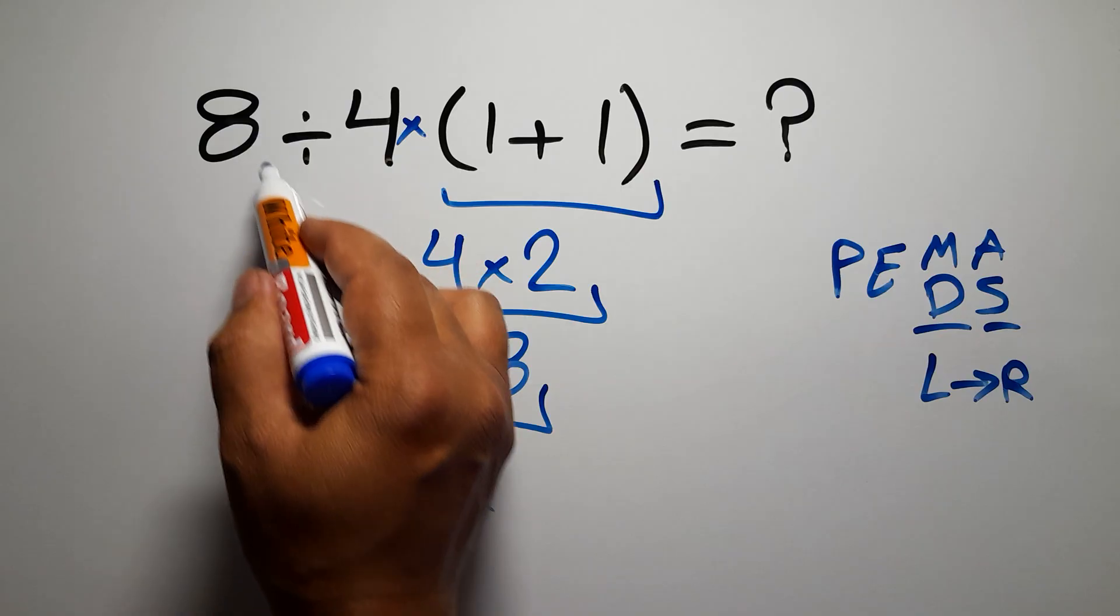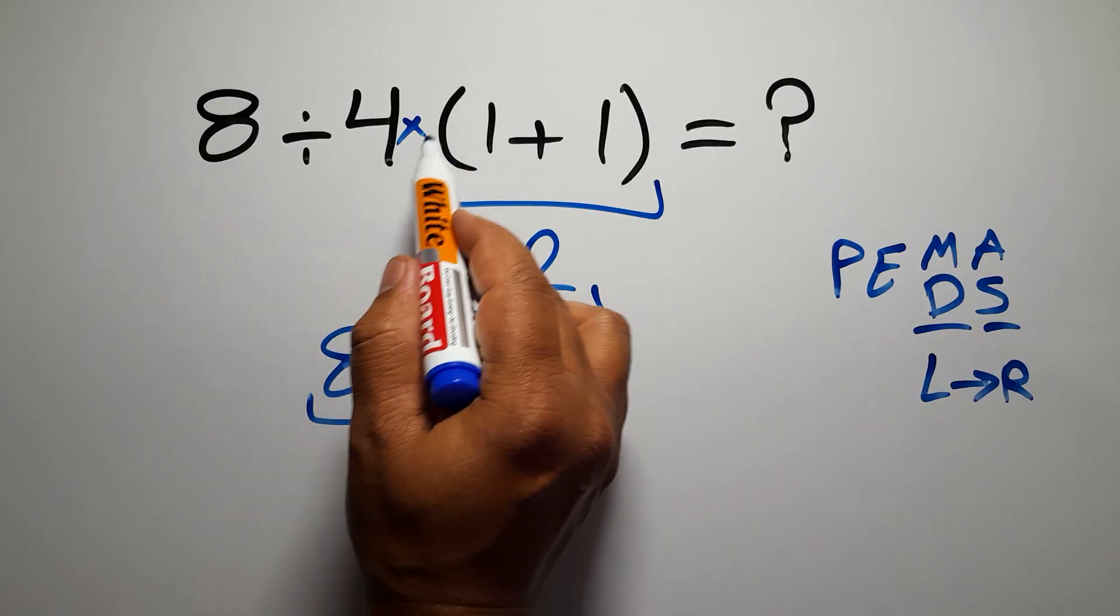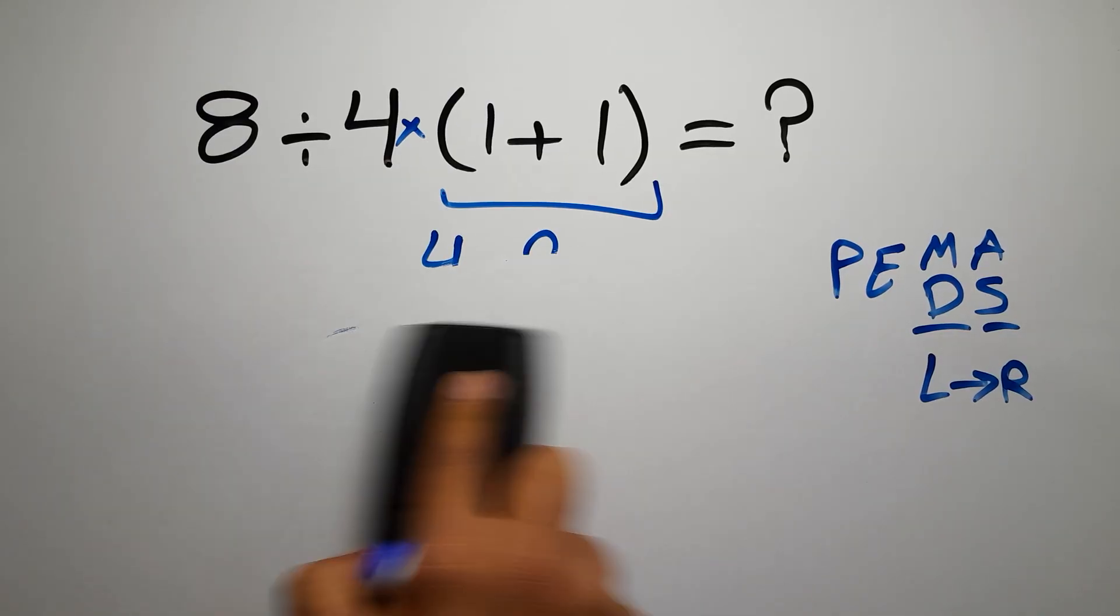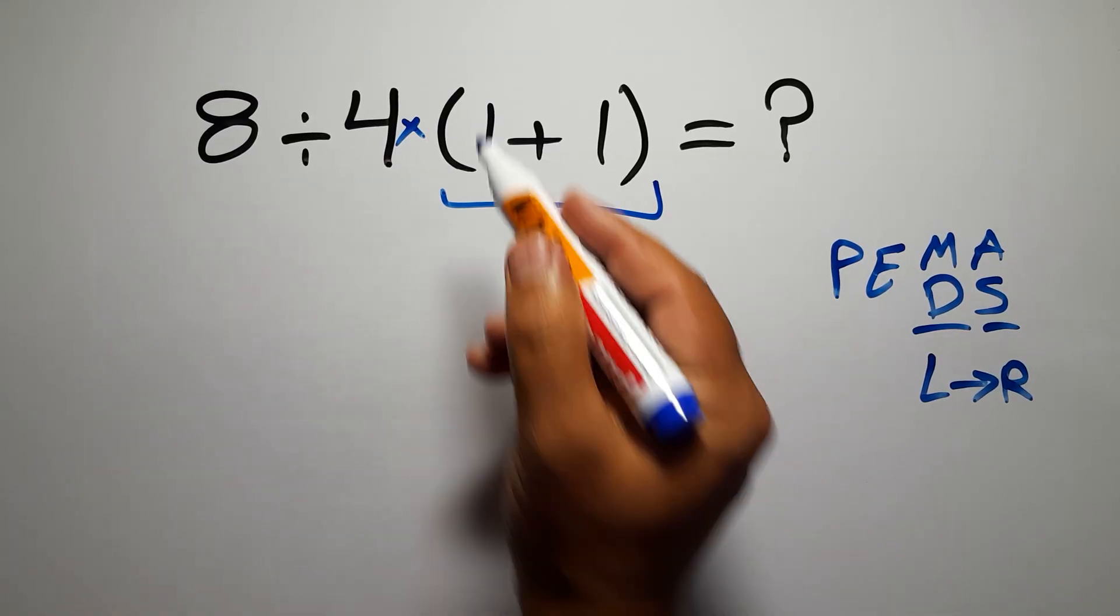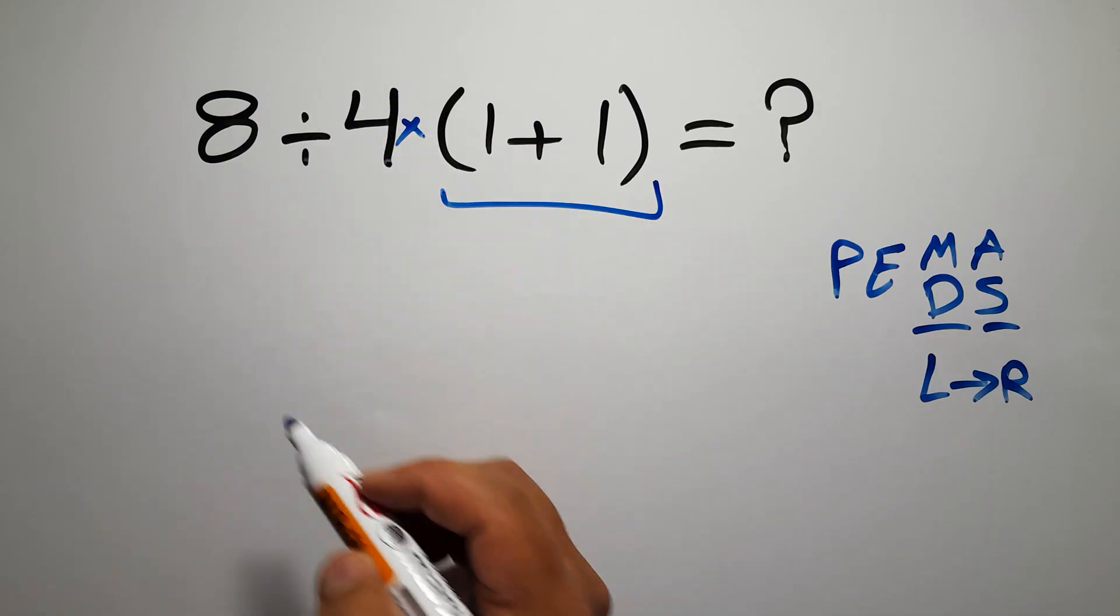we have to do this division, not this multiplication. If you do this multiplication before this division, it is wrong. So first these parentheses, then this division, and finally this multiplication.